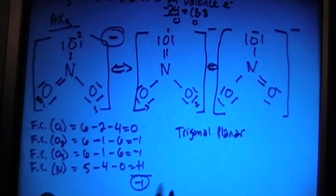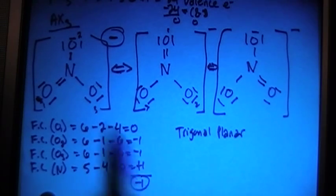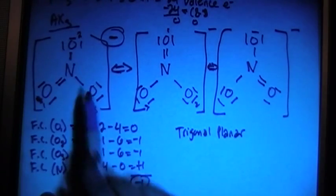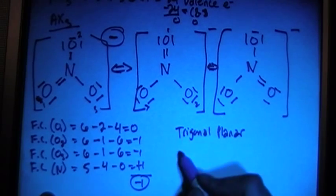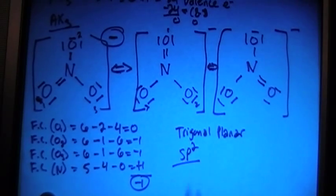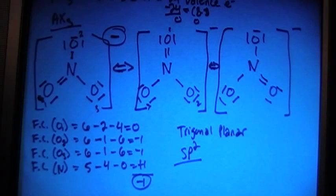And if you want to look at the hybridization for the center nitrogen, it has three things being attached with three bonding sites. So that's going to be an SP2 bonding site.